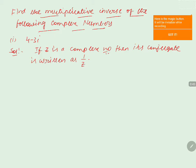Now we will come to the problem, that is 4 minus 3i, which is a complex number. So we will assume that let z equals 4 minus 3i.